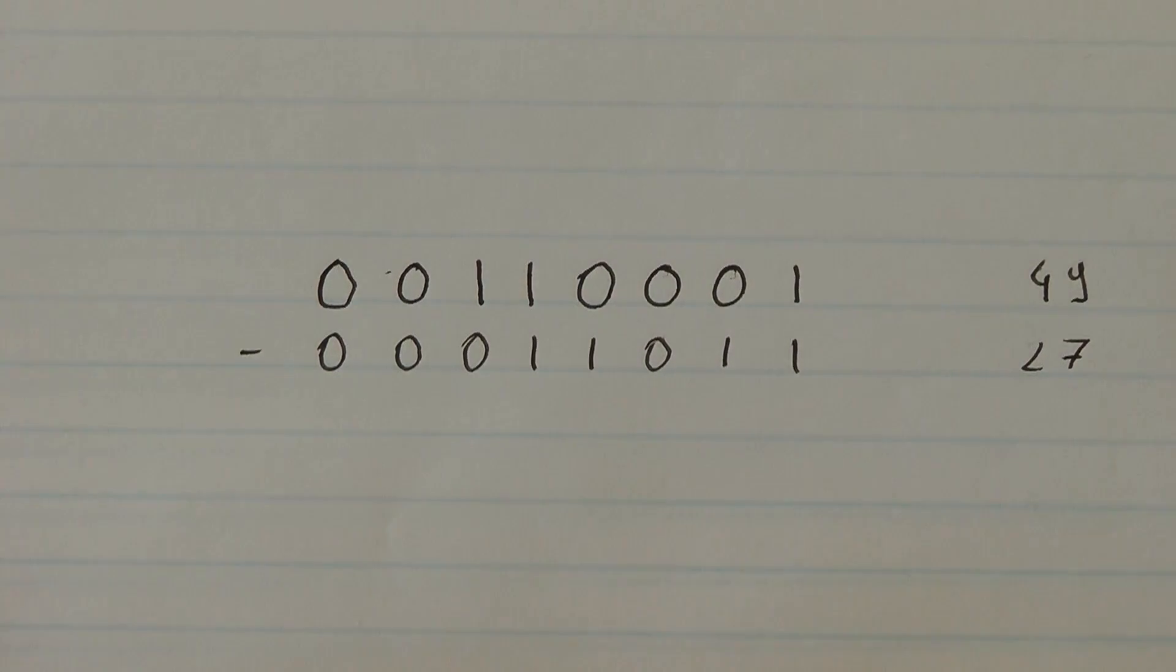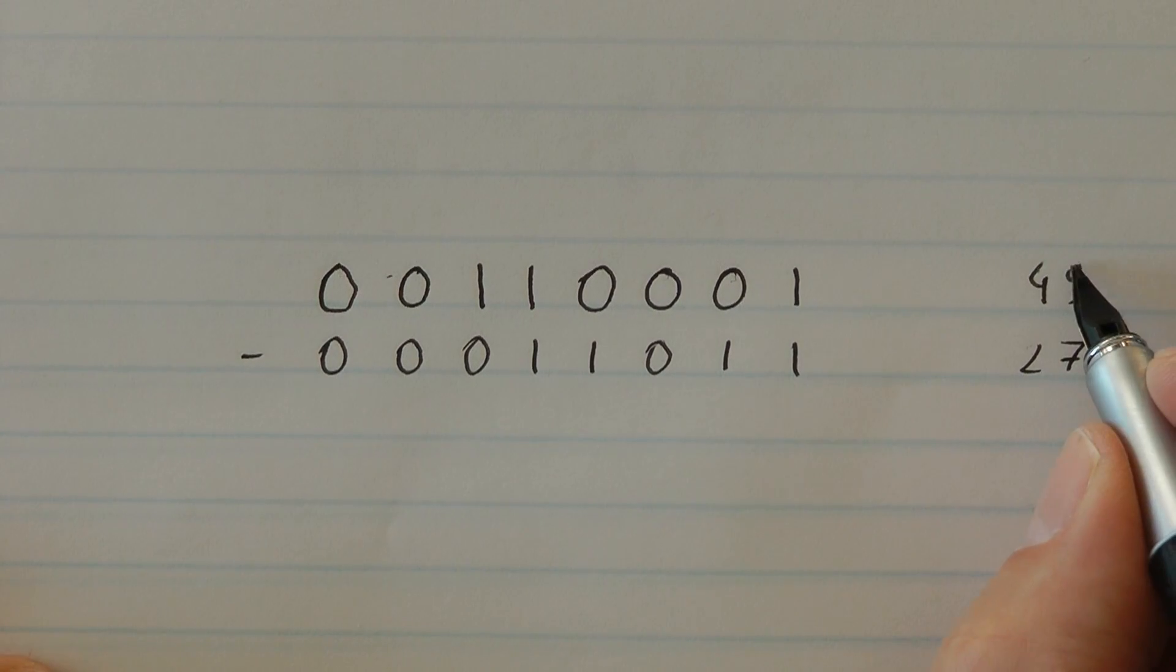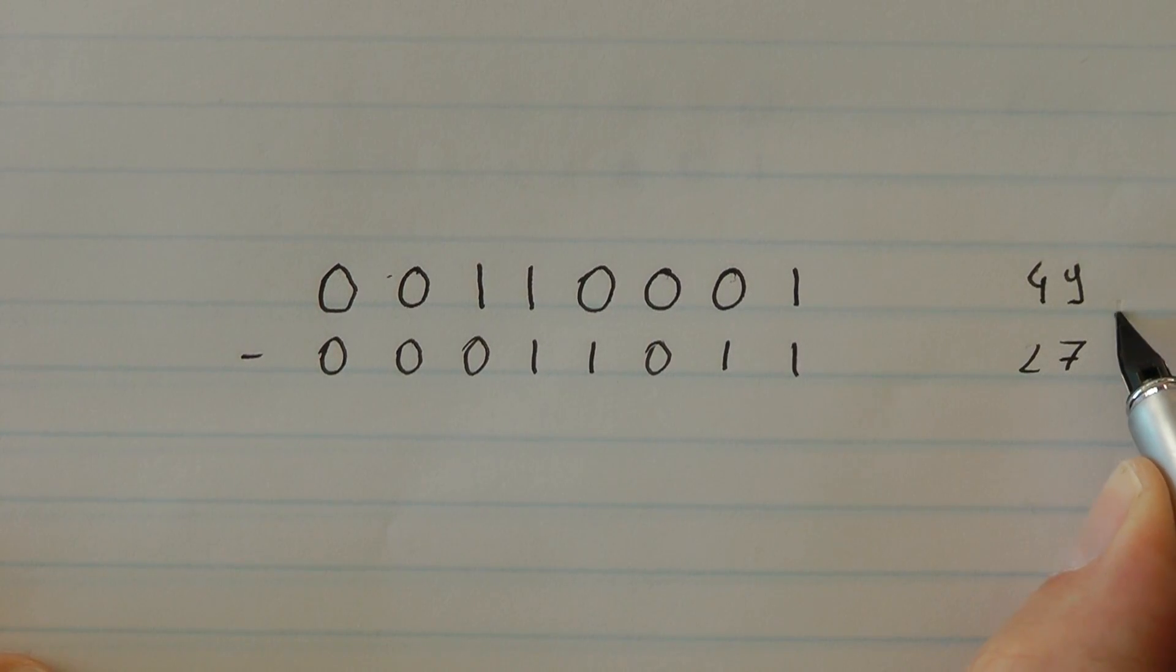Let's do an example with 8-bit numbers over here. We've got in base 10, so this is 49 minus 27 and these are the binary numbers.